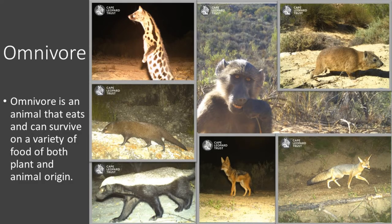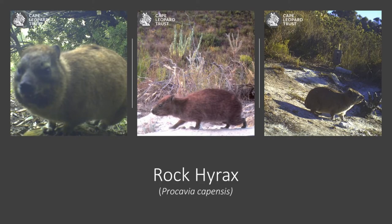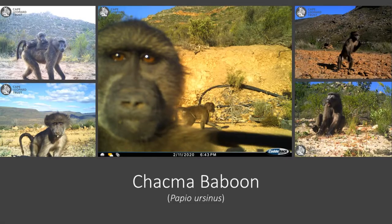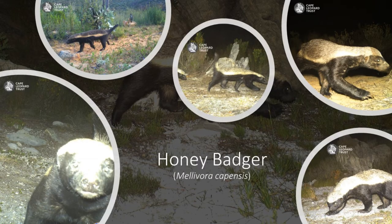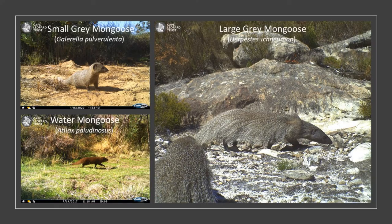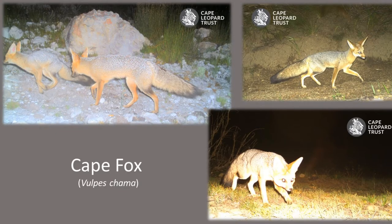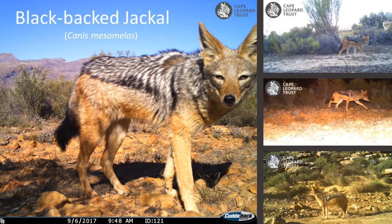Next we move to the omnivores. An omnivore is an animal that eats and can survive on a variety of food of both plant and animal origin. Examples of these are Rock Hyrax or Dassie, Chacma Baboon, Large Spotted Genet and Small Spotted Genet, Honey Badger, Small Grey Mongoose, Large Grey Mongoose and Water Mongoose, Cape Fox, and Black-backed Jackal.